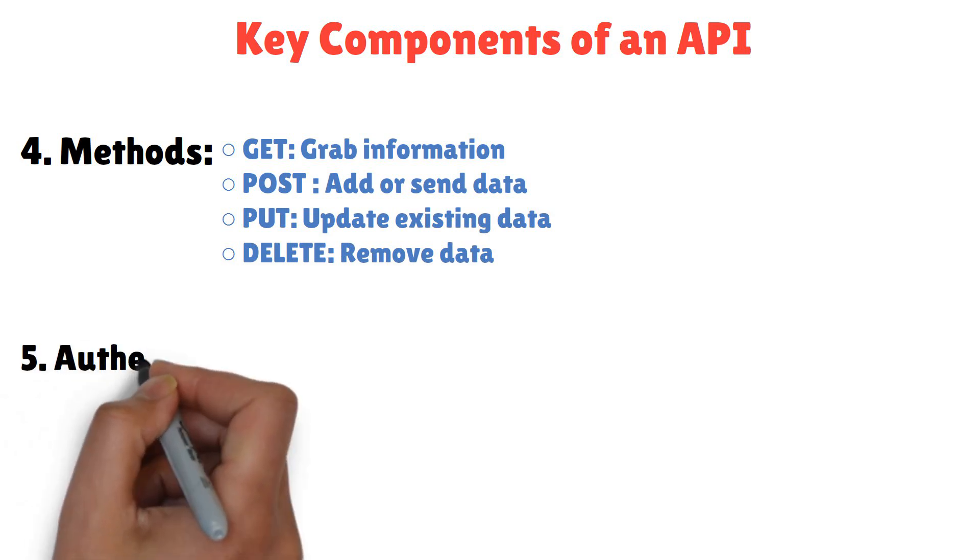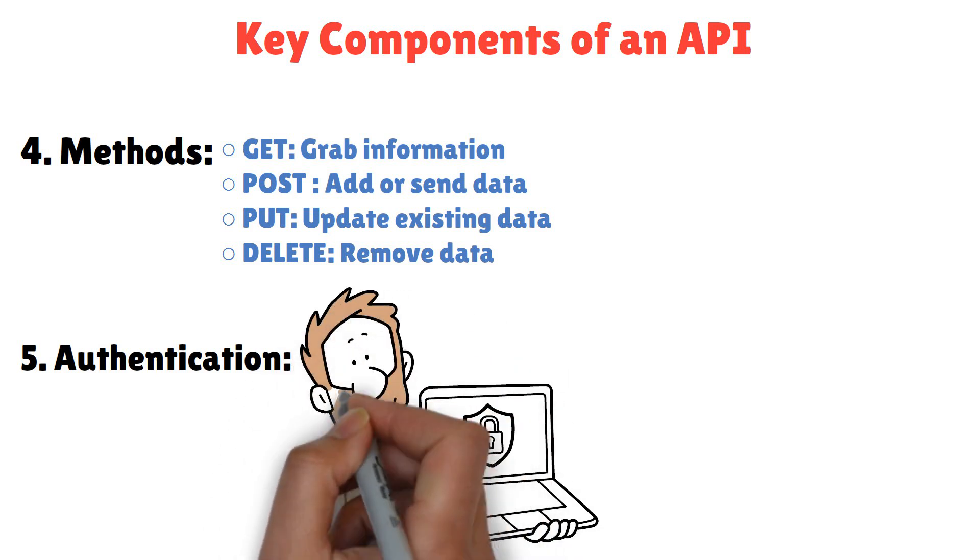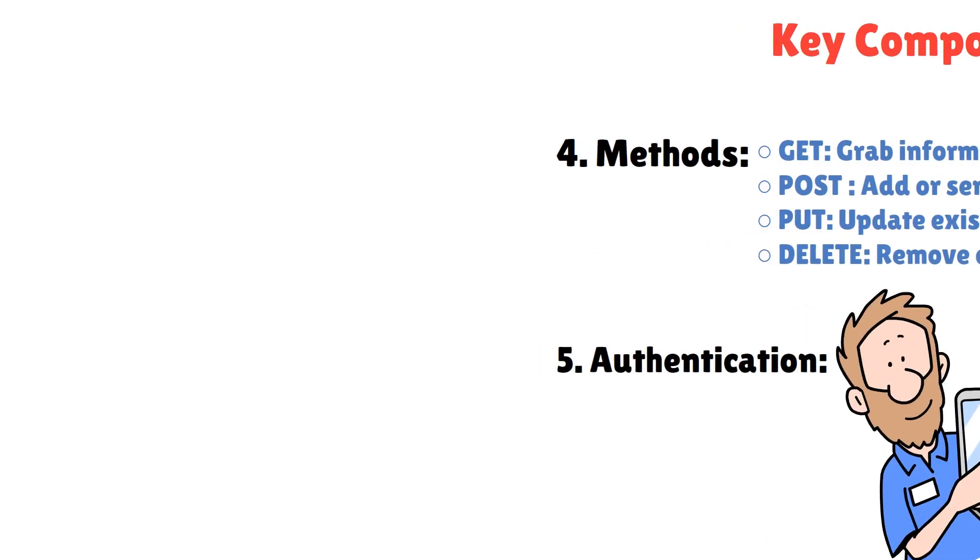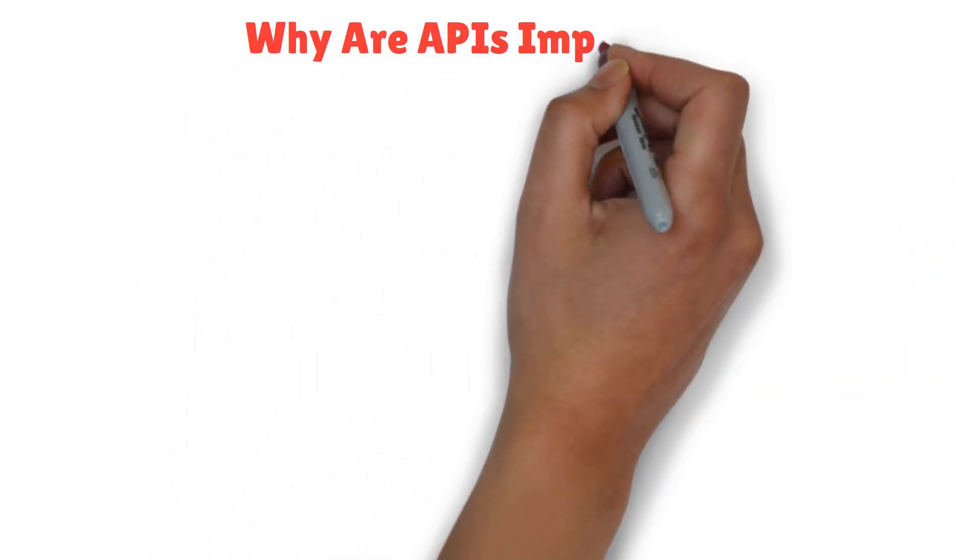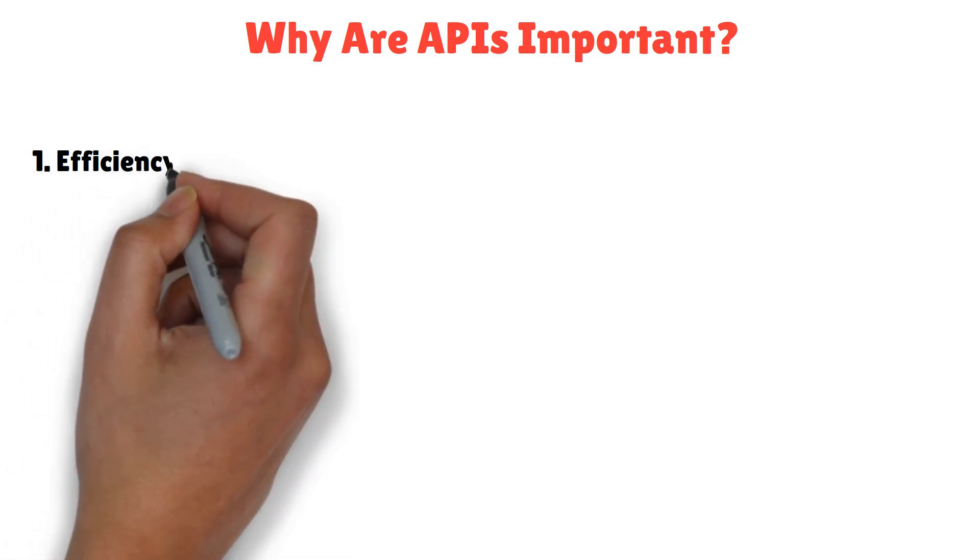Authentication. Most APIs require keys or tokens to ensure secure access. Kind of like a password for the kitchen. APIs make life easier for developers and users alike. Here's why they're a big deal.